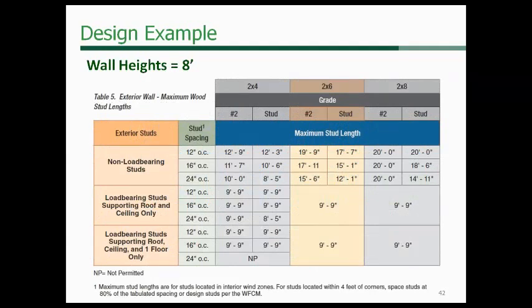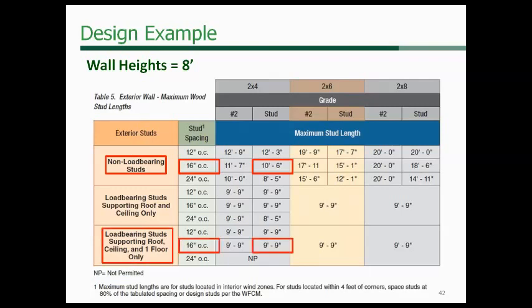For stud lengths on page 12 of the guide, our wall heights are 8 feet. For non-load bearing studs, the maximum for a 2x4 stud-grade wall is 10 feet 6 inches — greater than our 8 feet, so that's fine. For load-bearing studs supporting the roof, ceiling, and one floor at 16 inches on center, the maximum height is 9 feet 9 inches. Both are within limits, so our 8-foot wall height is acceptable.